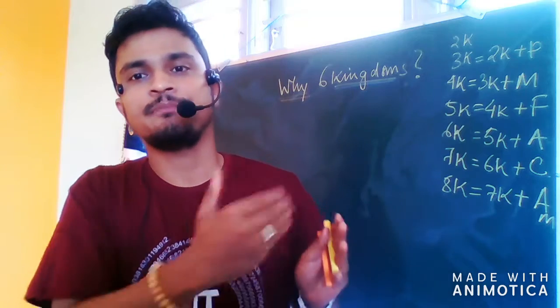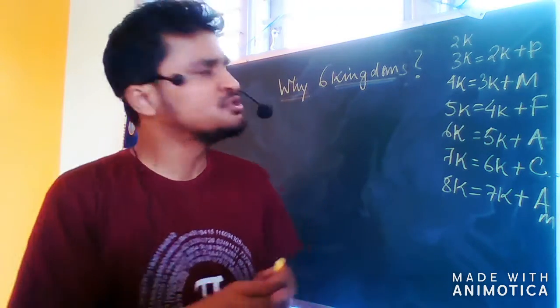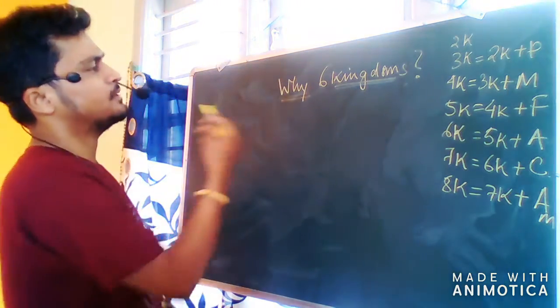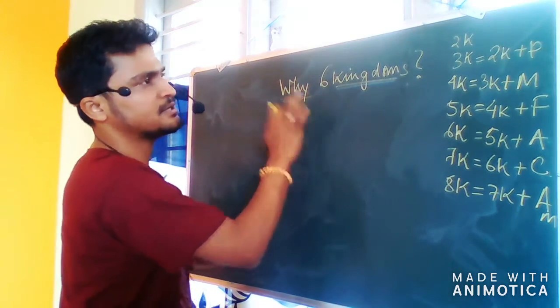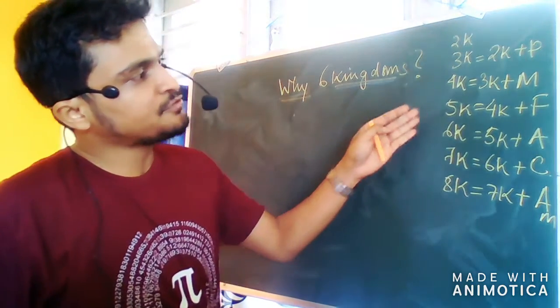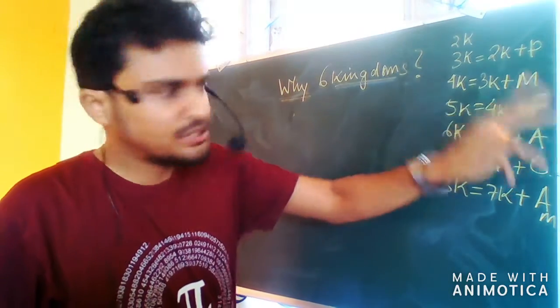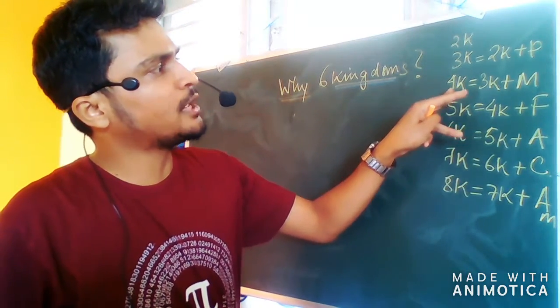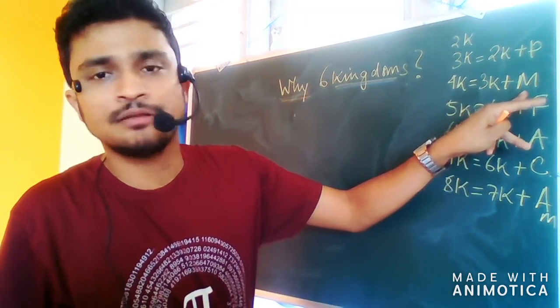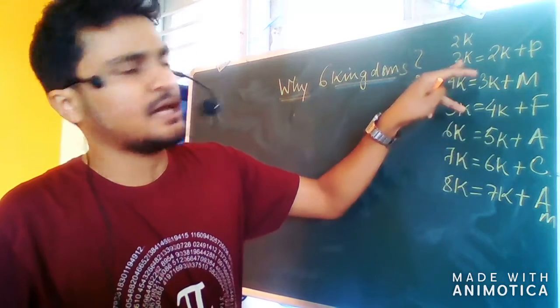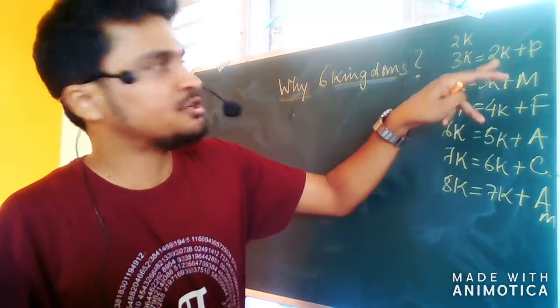The five kingdoms were Monera, Plantae, Animalia, Protista, and Fungi. So why did this sixth kingdom appear along with them? The five kingdom came from the four kingdom with the addition of Fungi. Four kingdom is three kingdom plus Monera, the bacteria given by Copeland.